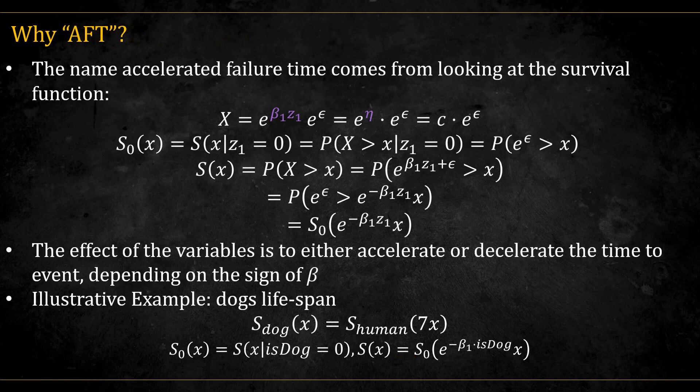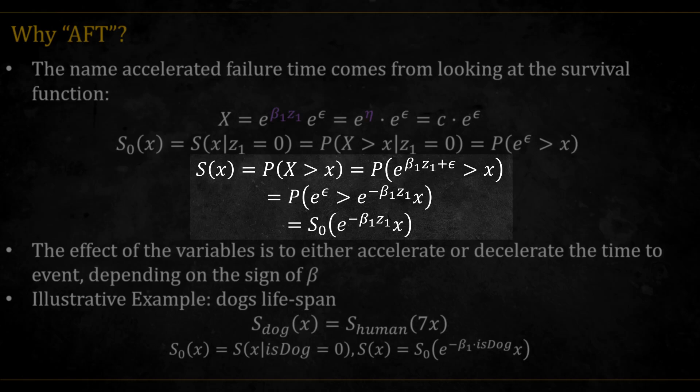Finally, you might wonder, why is this model called accelerated failure time? Well, let's look at the survival function. Let's denote by s0 the survival function when the risk factor is equal to zero. Notice that when we look at the full survival, it is actually equal to this s0, but of x adjusted by some value. In the case of the log transformation, it is x multiplied by this.